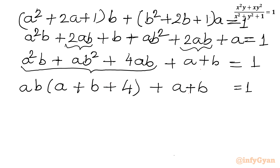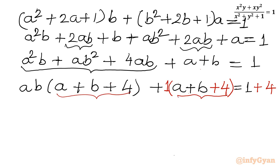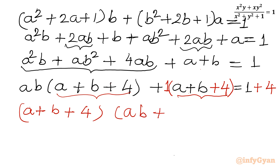From the first three terms, ab is common: ab(a + b + 4) + (a + b) = 1. To factor out (a + b + 4) from both parts, I add 4 to both sides: (a + b + 4)(ab + 1) = 5.